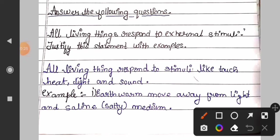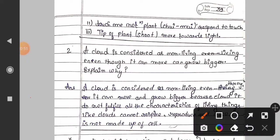Answer: All living things respond to stimuli like touch, heat, light, and sound. Example: Earthworm moves away from light and shine medium. Second example: Touch-me-not plant, we call in Hindi chui mui plant, responds to touch. Third, tip of plant means shoot moves towards light.